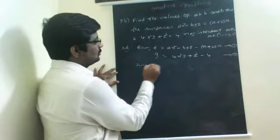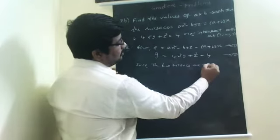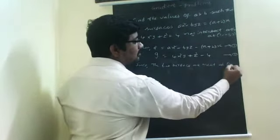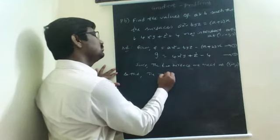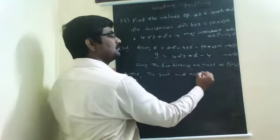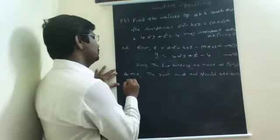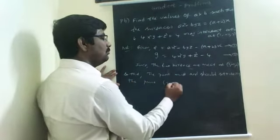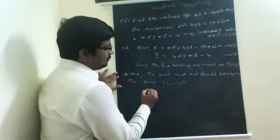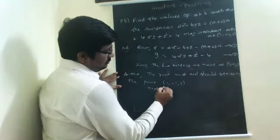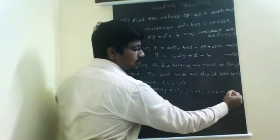Since the two surfaces meet at the point (1, −1, 2), that point must and should satisfy both surfaces. Now, replacing x as 1, y as −1, z as 2, and substituting in equation 1.